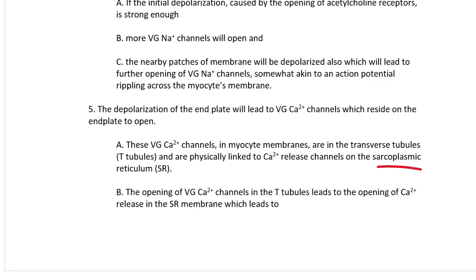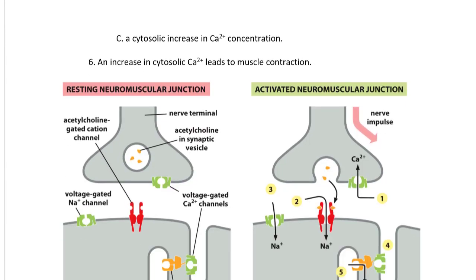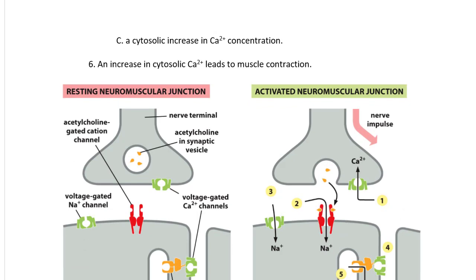The sarcoplasmic reticulum is what the endoplasmic reticulum is called in a muscle cell. The ER and SR contain a high concentration of calcium — much higher than in the cytosol. Opening of the voltage-gated calcium channels and the calcium release channels on the SR leads to calcium moving down its electrochemical gradient into the cytosol — from extracellular via voltage-gated channels and from the SR lumen via release channels. This cytosolic increase in calcium concentration leads to muscle contraction.